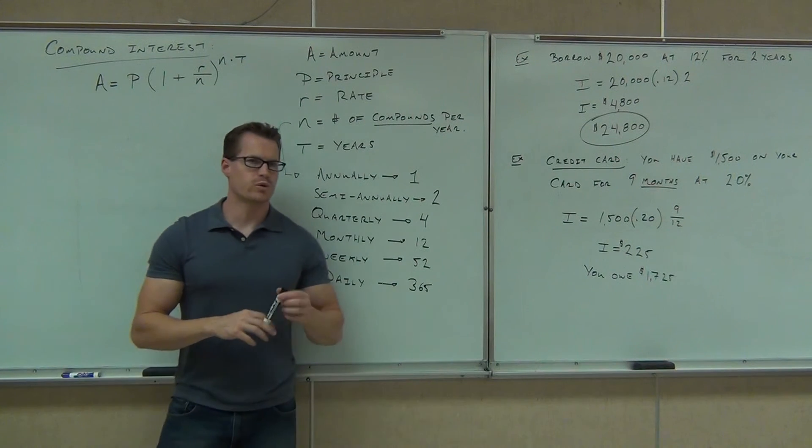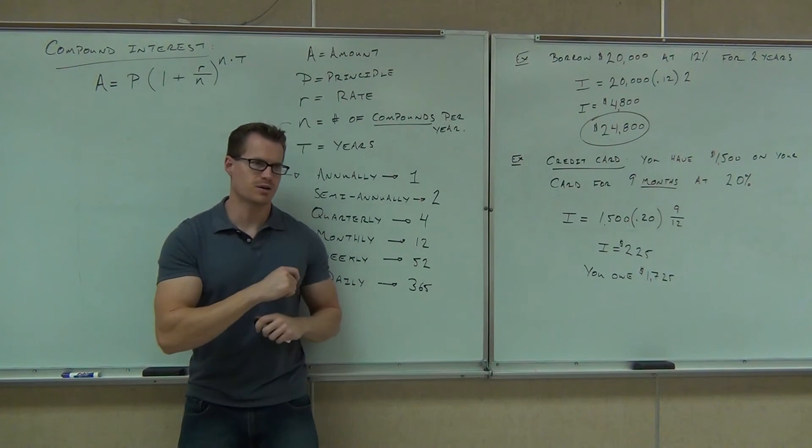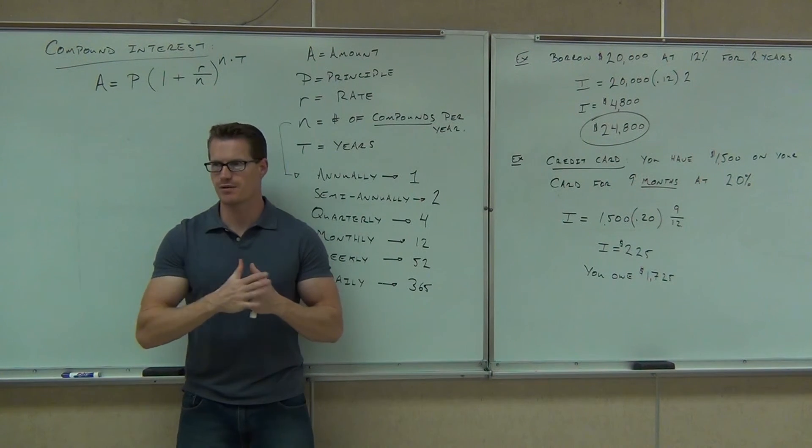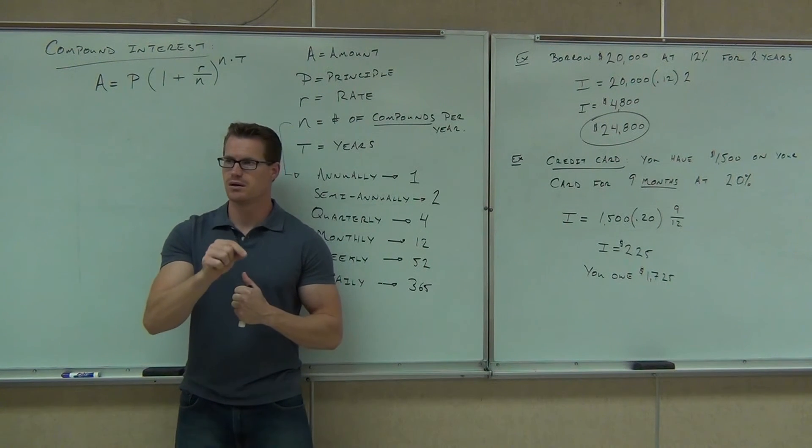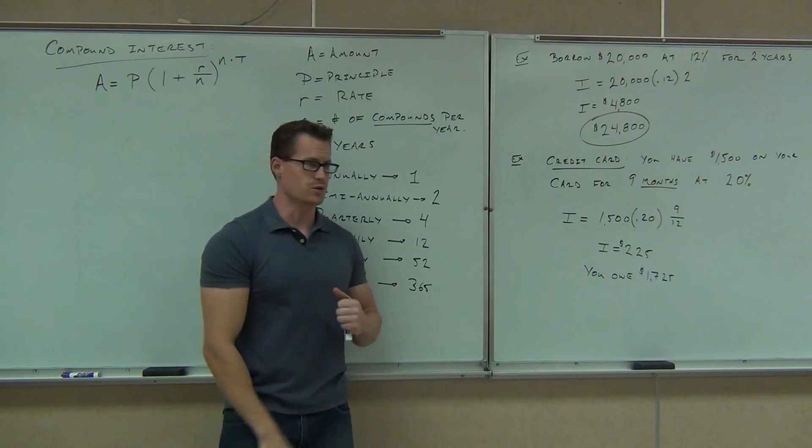There's also another one which uses a different formula which we're not going to talk about. It's called continuously compounded interest. That means that every moment of every second of every minute of every hour of every day of every week of every month of every year, you're getting interest tacked on to what you owe or to what you have in the bank, continuously compounded every single moment, you're getting a little bit more interest.